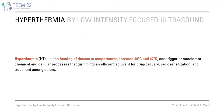By hyperthermia we mean the heating of tissues to temperatures between 40 and 47 Celsius. It can trigger or accelerate chemical and cellular processes that turn it into an efficient adjuvant for drug delivery, radiosensitization, and treatment, among others.